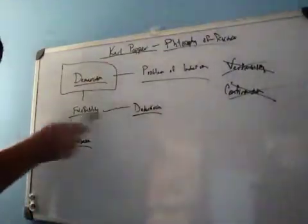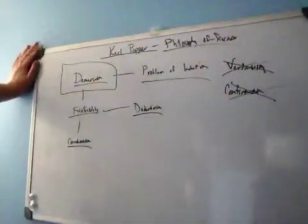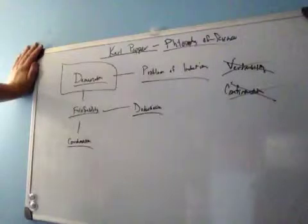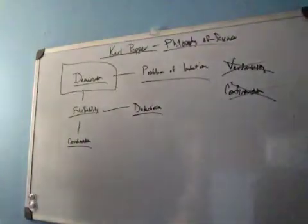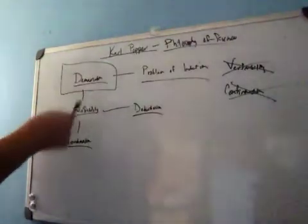Popper didn't think that we could confirm or verify things, but we should falsify them, in that the whole action of science is to have theories that make predictions, and the whole work of science is to find ways to disprove them or to falsify them.